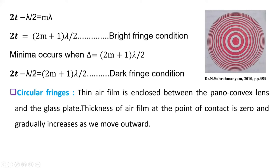And see friends, minimum occurs. This darkness occurs when this optical path difference Δ = (2m + 1)λ/2. So putting this value here, 2t - λ/2 = (2m + 1)λ/2. This is the condition for dark fringes.